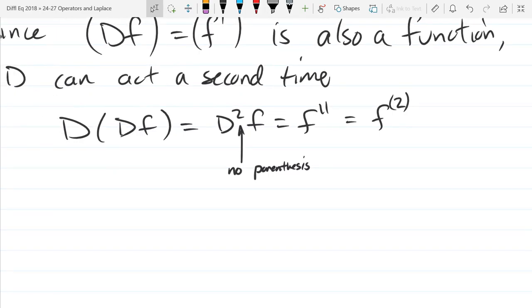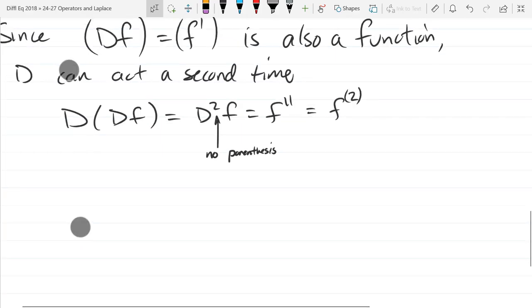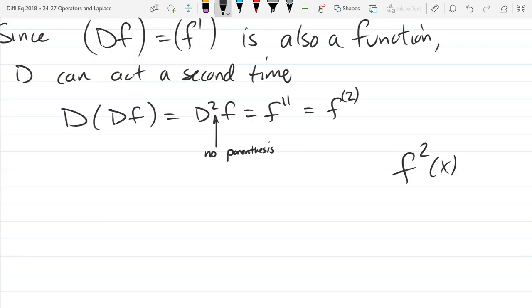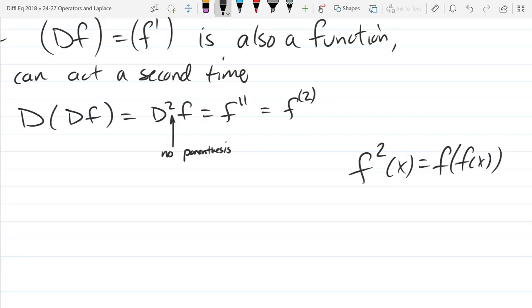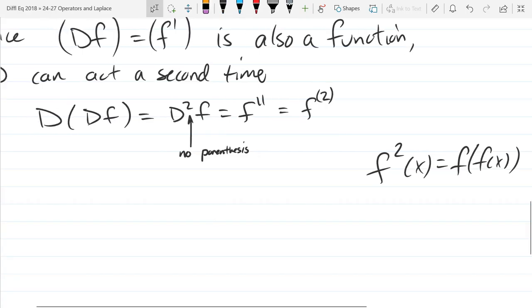When we use the operator notation, no parenthesis on this too. Because when I write D squared, I mean apply D and then apply D a second time. You're applying D twice in a row. Just like if you saw f^2(x), what it should mean is take f of x and then take f of x again. That's what f squared x really means. Apply f twice. Unless you're in trigonometry class, in which case it means f of x times f of x, but that's a different story.